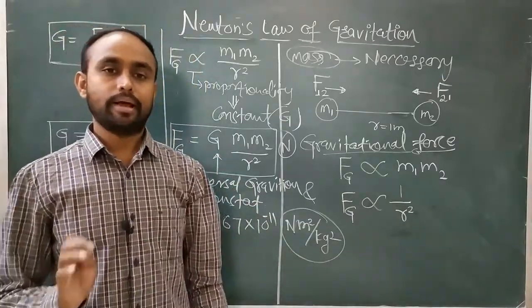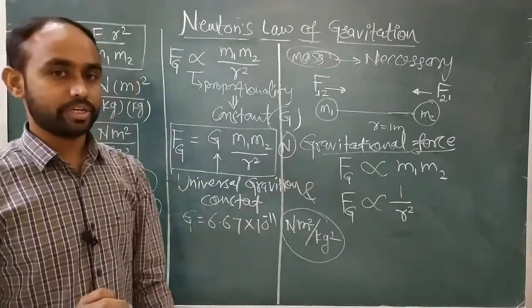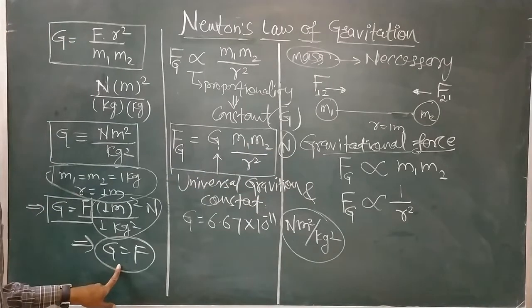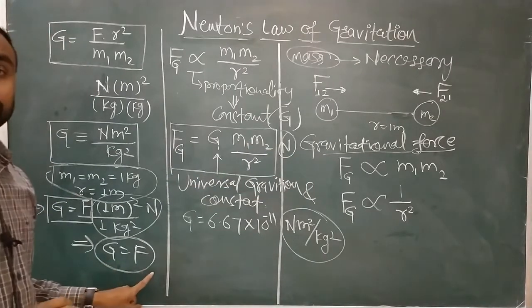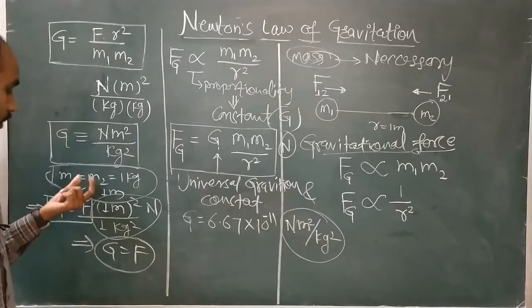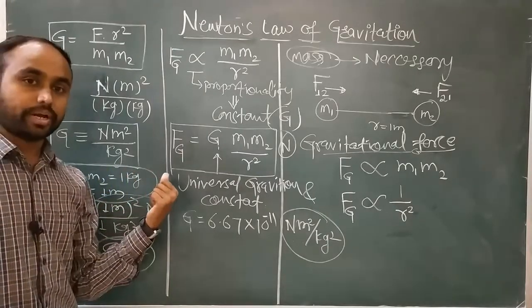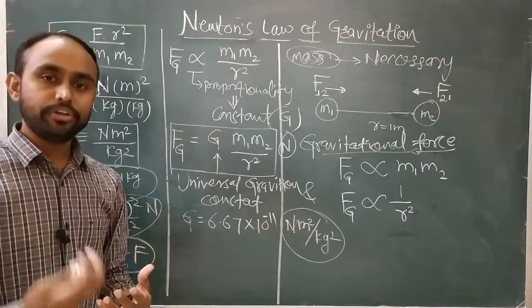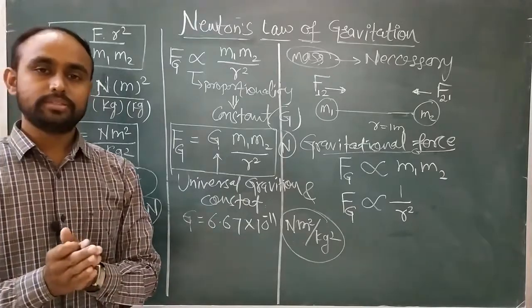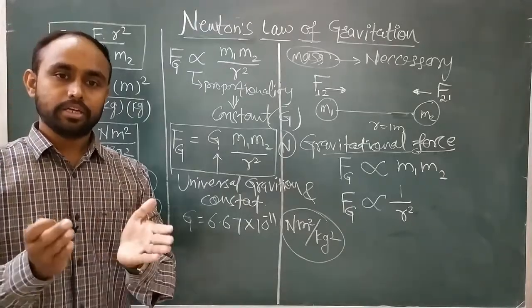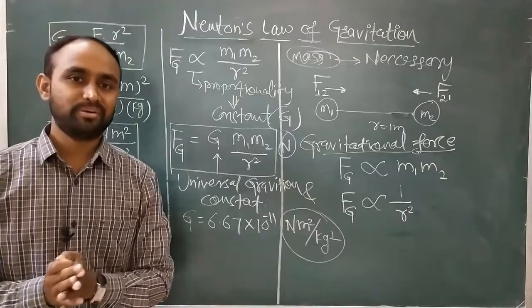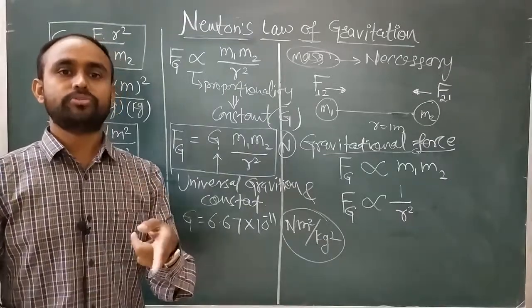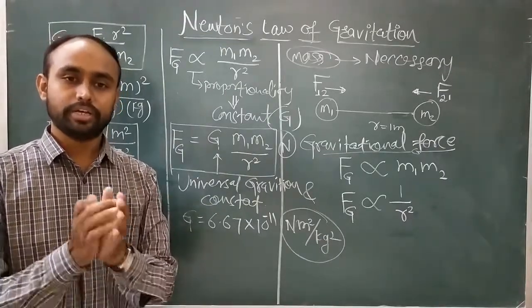Whatever we have seen here - the proportionality statements, the equation F = G·M1·M2/R², and G equal to F under the specific conditions M1 = M2 = 1 and R = 1 - this is all for our understanding of how to define G. Yes, this is all about Newton's law of gravitation. If you have any doubts, post in the comment box. If you feel this is a value addition to your knowledge, like our video, share with your friends, subscribe to our channel, and keep learning. Thank you.